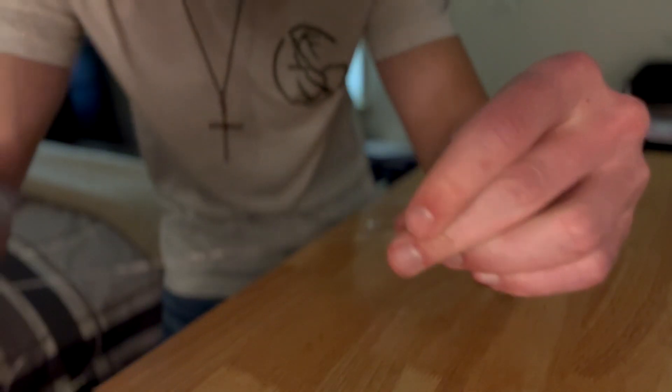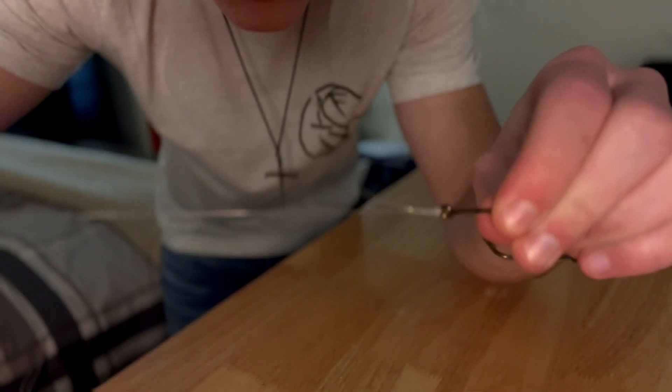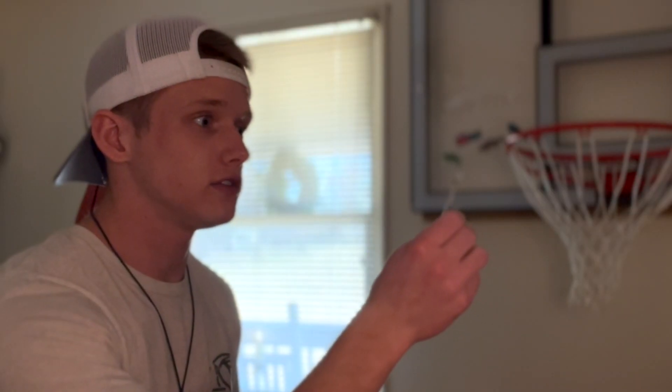Once you've done that, pull in the excess line. Then take this main line right here, pull, and cut your knot. That is the union knot.